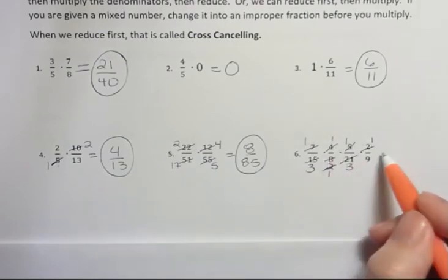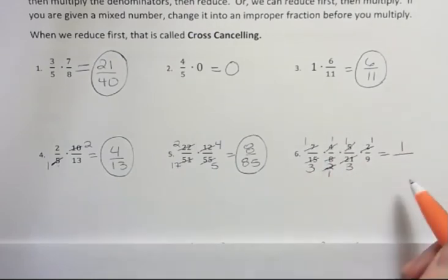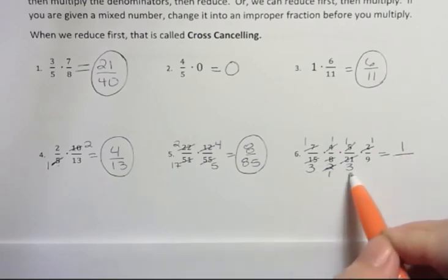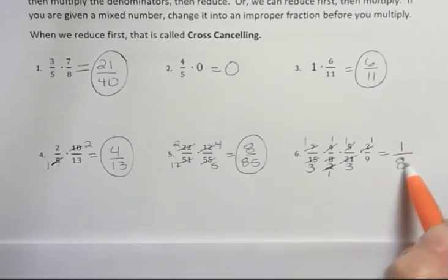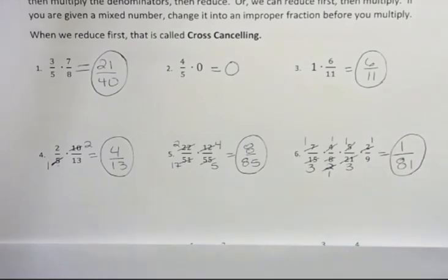On the top, 1 times 1 times 1 times 1 is 1. I definitely need to have a numerator. It's going to be 1. And on the bottom, 3 times 3 is 9, times 9 is 81. And that will be that answer.